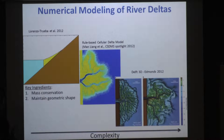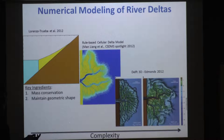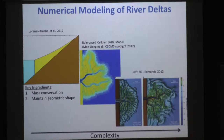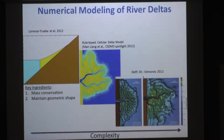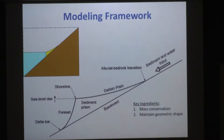Which model we use depends on the question we are trying to address. If we are interested in the average response of the shoreline to different subsidence profiles and sea level rise rates, maybe we can use just an average cross-shore model. If we are interested in the controls of river evolution, we probably want to go one step further in terms of complexity. Today I'm going to focus on the simpler type of models, and I'll give two examples — one for deltas and one for barriers.